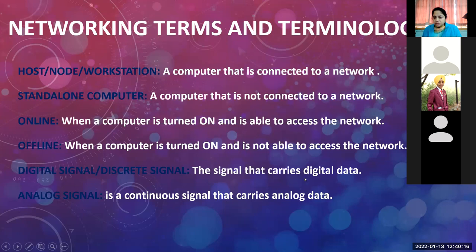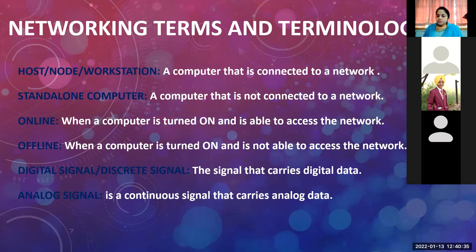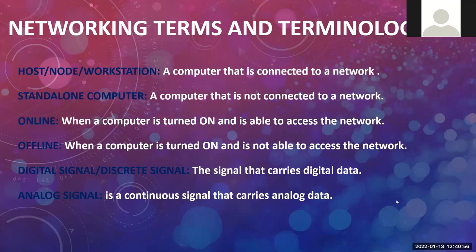When a computer is turned on and is not able to access the network, that is offline. When the computer is on and is able to access the network, that is online. An example of LAN is computers connected within a school building.